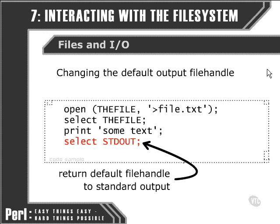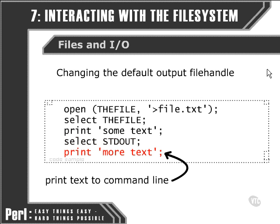Standard output is the file handle that is automatically selected to be the default output file handle. And although it's referred to as a file handle, it's not actually writing to a file — it's writing back to the user, writing to the shell. So this time when we ask Perl to print out this line of text, that line is printed back to the user.